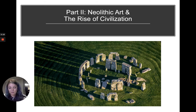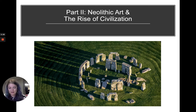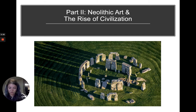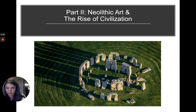Stonehenge is an example of a henge — h-e-n-g-e — or a cromlech, c-r-o-m-l-e-c-h, which is another term for the same thing. A henge or cromlech is a megalithic monument in which the megaliths are arranged in a circle. These are vocabulary words you're going to want to take note of: megalith means big stones, and henge or cromlech means those big stones arranged in a circle.